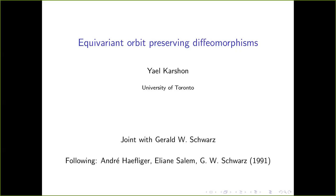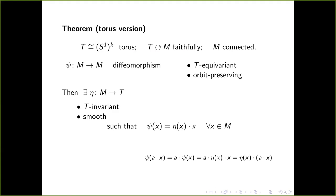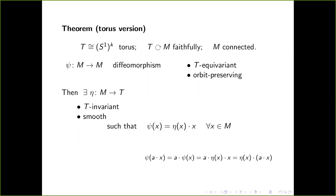This goes back almost 30 years to a result attributed to Schwartz in a paper by Haefliger and Salem. Let me give you a torus version of the theorem. Take a torus, take a manifold, take a torus action on the manifold, and assume that the manifold is connected. Suppose you have a diffeomorphism of the manifold that takes every point to a point on the same orbit — for every point there is an element of the torus by which you act to reach psi of that point, where psi is the diffeomorphism.